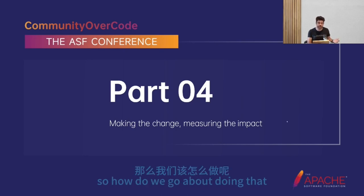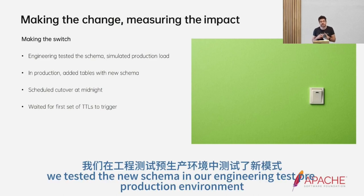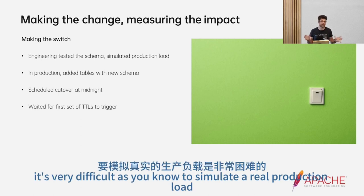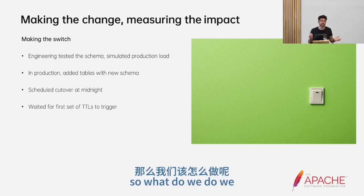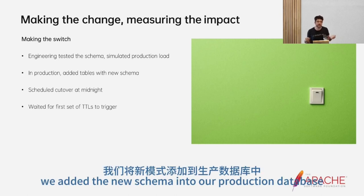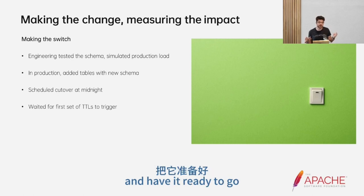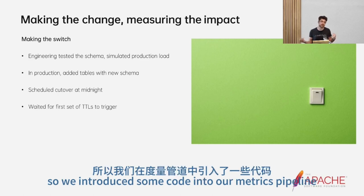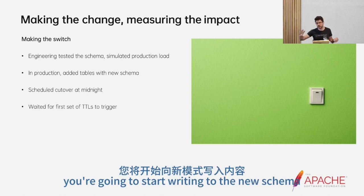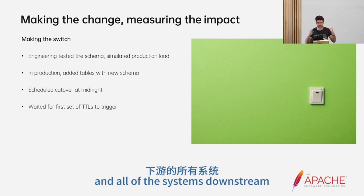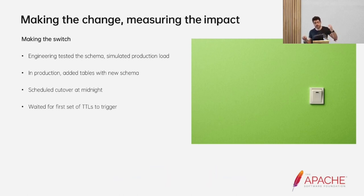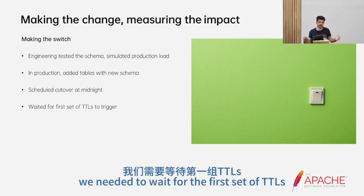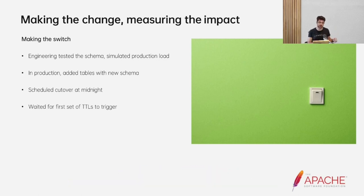So how do we actually make that change? First, we tested the new schema in our engineering test pre-production environment — that all showed as optimal. We simulated some production load, and were happy that the performance tolerance was well within the bounds we expected. We added the new schema into our production database, which allowed us to stage everything and have it ready to go. Then at a designated time we scheduled a cutover — we introduced code into our metrics pipeline that said, as of this date, start writing to the new schema — giving us a very clean separation. All downstream systems followed the same logic. Then we had to wait around 14 days for the first set of TTLs to start triggering and compacting away.